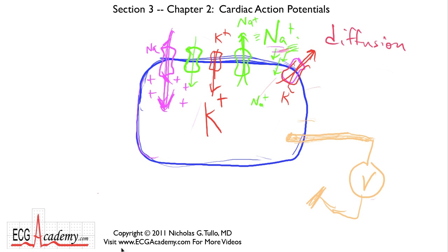If we display that on a screen, if this is zero volts, it lives down here around minus 90. That's the resting membrane voltage gradient. We call it the potential, or transmembrane potential, about minus 90 millivolts.